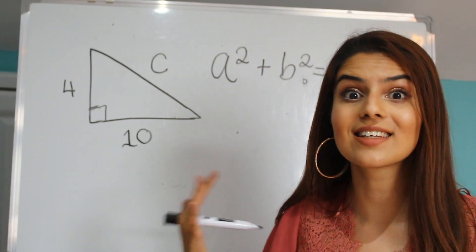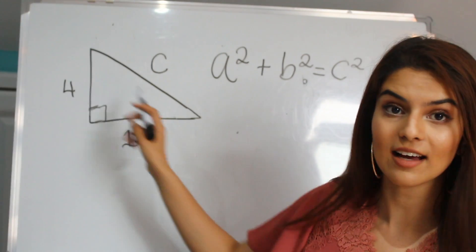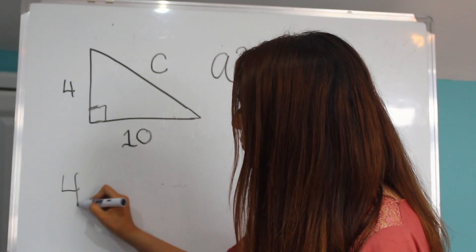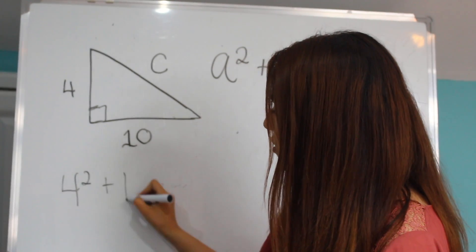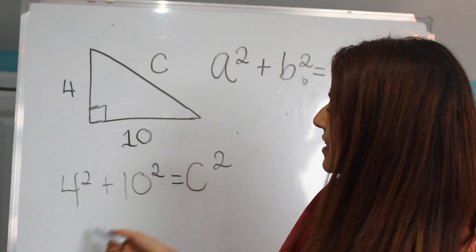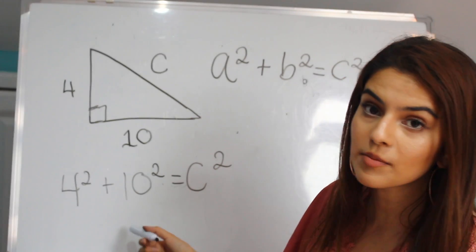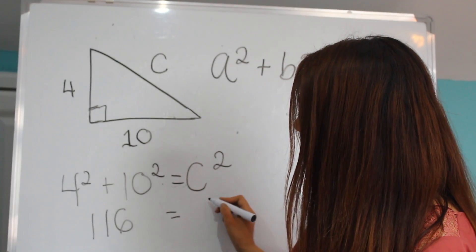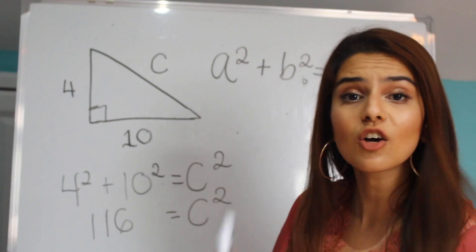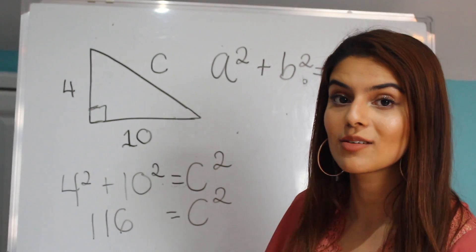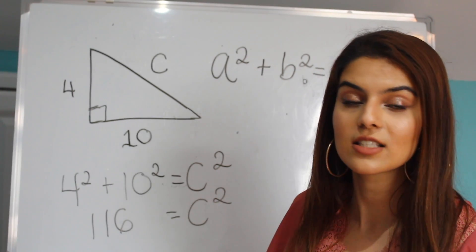But we always must remember that the C has to be the longest side. What we basically do is we do 4 squared plus 10 squared equals C squared. So 16 plus 100 which is 116 equals C squared. A lot of people forget to do this and just leave the answer like this. But we actually do need to square root both sides to get C.